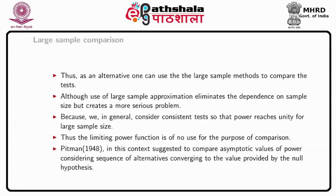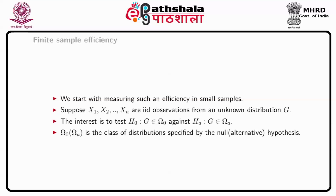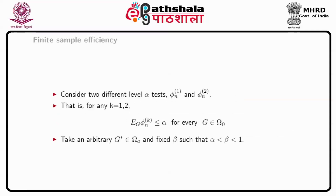An appropriate choice of the sequence of alternatives enables a clear comparison. First, we come to finite sample efficiency. Suppose x1, x2, ..., xn are iid observations from an unknown distribution function g, and our interest lies in testing H0 that g belongs to a subclass omega_0 against an alternative Ha that g belongs to some subset omega_A, which is disjoint from omega_0. Consider two different level-alpha tests denoted by phi_n^(1) and phi_n^(2) — that is, for any k equal to 1 and 2, the expected value of phi_n^(k) under g is less than or equal to alpha for every g belonging to omega_0.